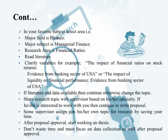In your favourite subject, select an area. For example: major field is finance, major subject is managerial finance, and research area is financial ratios. Read the literature and clarify variables — for example, 'the impact of financial ratios on stock returns: evidence from the banking sector of the USA,' or 'the impact of liquidity on financial performance: evidence from the banking sector of the USA.' If literature and data are available, then continue; otherwise, change the topic.